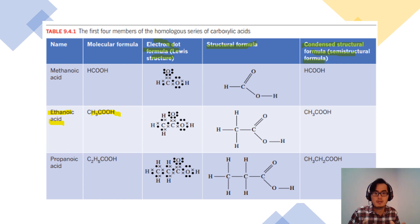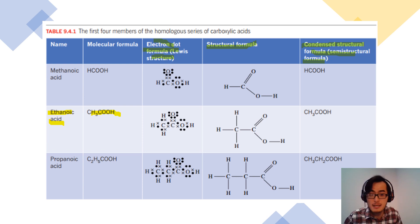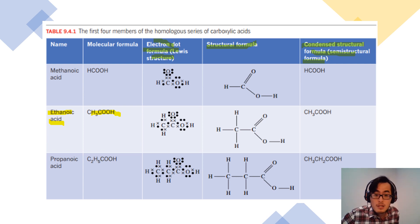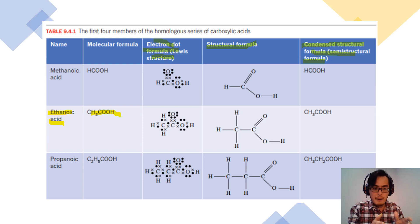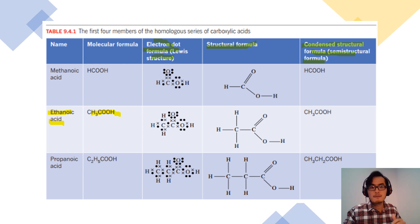If the compound consists of two carbons, it's known as ethanoic acid. One carbon is methanoic acid — also commonly known as formic acid. Ethanoic acid is also known as acetic acid, and so on. Propanoic acid consists of three carbons. It follows the systematic stem names: one carbon is methanoic acid, two carbon is ethanoic acid, three carbons is propanoic acid, four carbons is butanoic acid, five carbons is pentanoic acid.